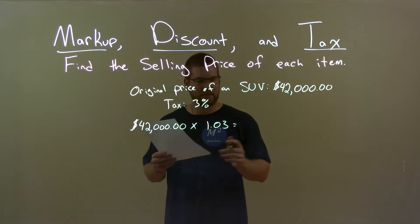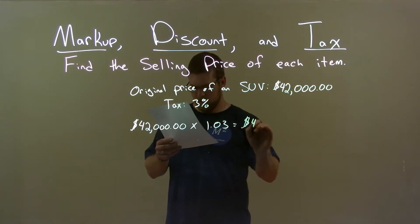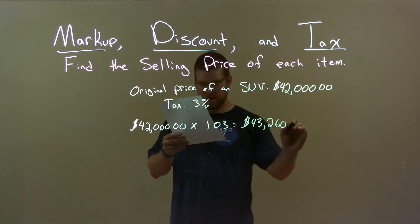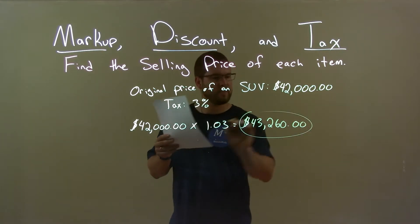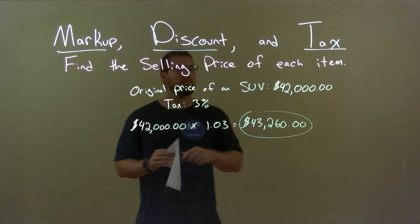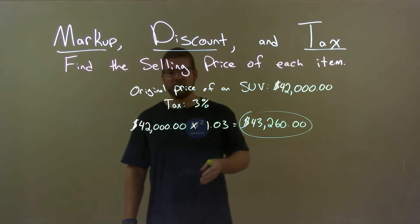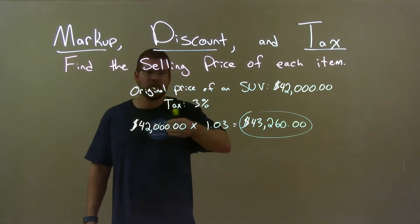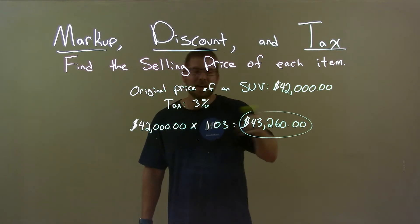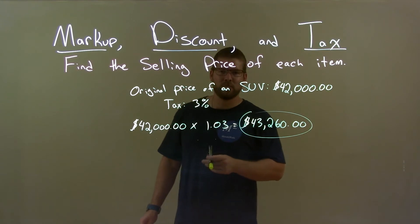This gives us an after-tax total of $43,260.00. Quick recap: we're given the original price of an SUV of $42,000 and a tax of 3%. We take $42,000, multiply that by 1.03, and get a final answer of $43,260.00.